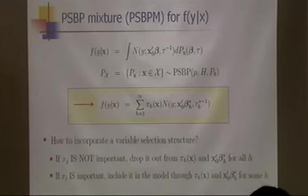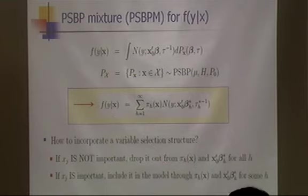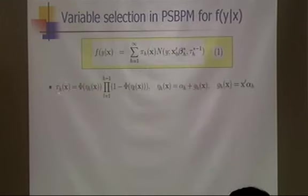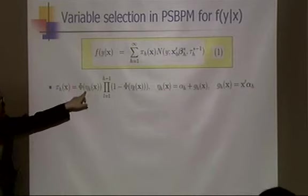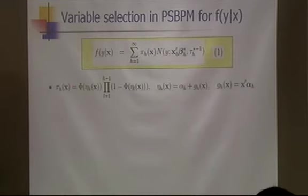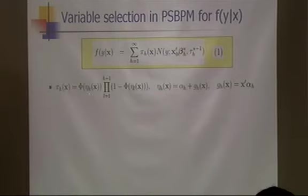The beta_h vectors are random components associating predictors to the conditional density through the regression mean. There is also another component linking predictors to the conditional density through the predictor-dependent mixture weight. In the PSBP formulation, the values plugged into the CDF form a linear function of x — another regression form — and both components need to be addressed for variable selection.